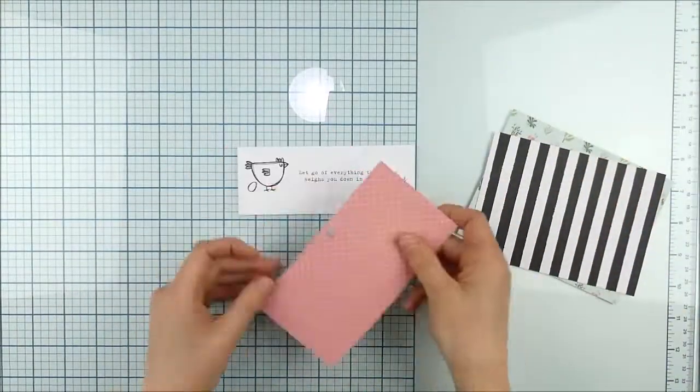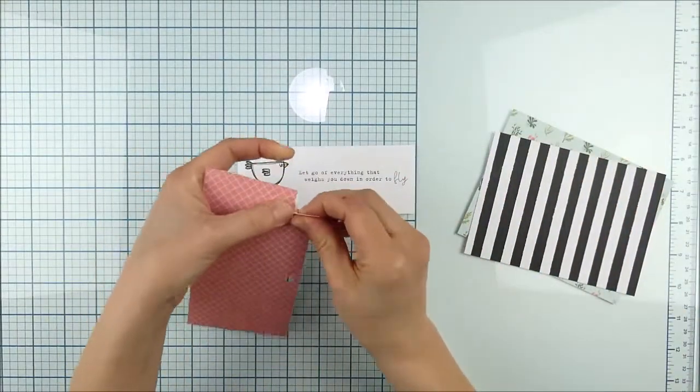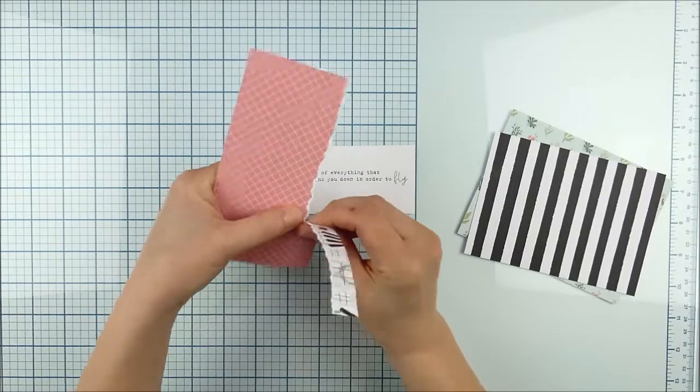You might notice I left a little more space at the bottom. That's where we're going to put our fun little embellishment cluster. But first, you know me with pattern paper, I often like to add a torn edge.